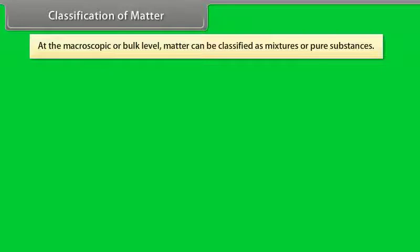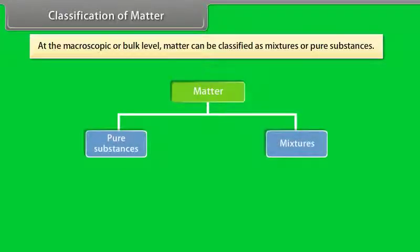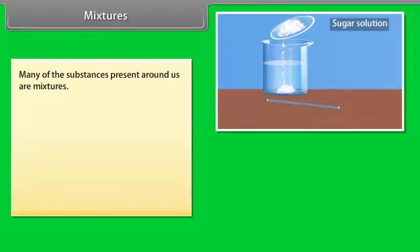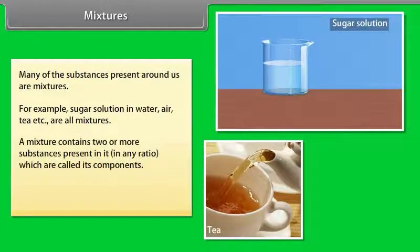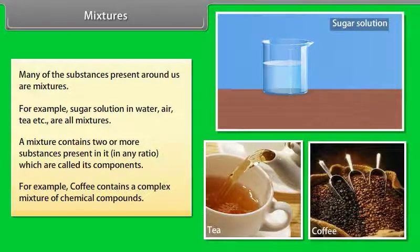At the macroscopic or bulk level, matter can be classified as mixtures or pure substances. Many of the substances present around us are mixtures. For example, sugar solution in water, air, tea, etc., are all mixtures. A mixture contains two or more substances present in it, in any ratio which are called its components. For example, coffee contains a complex mixture of chemical compounds.